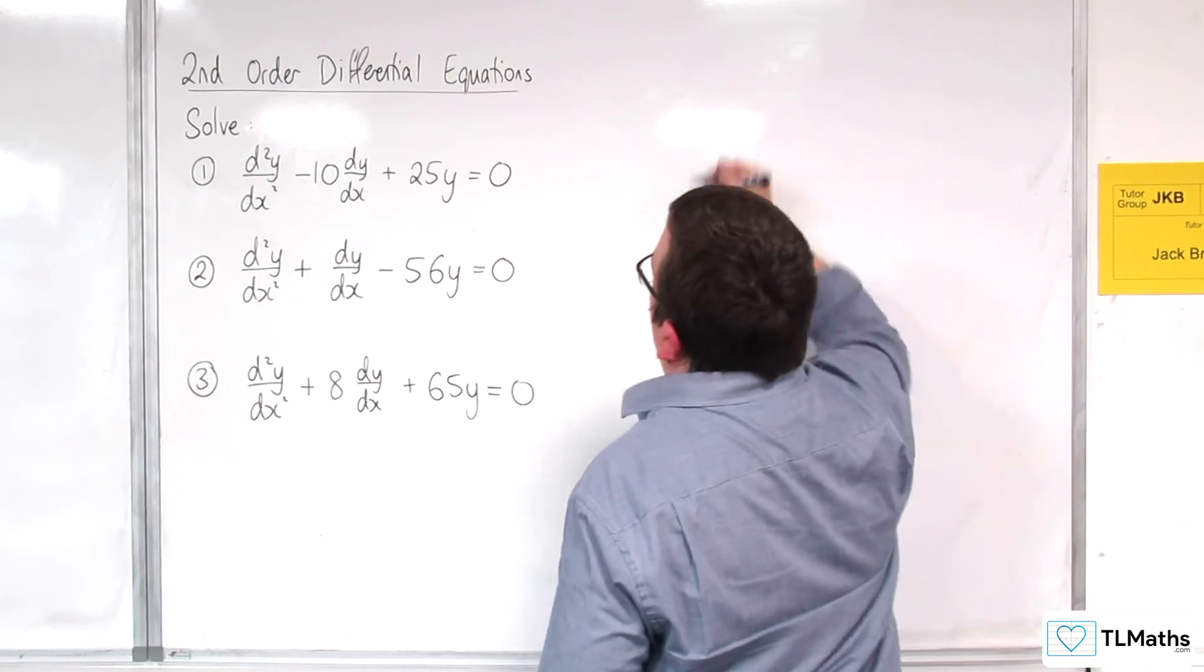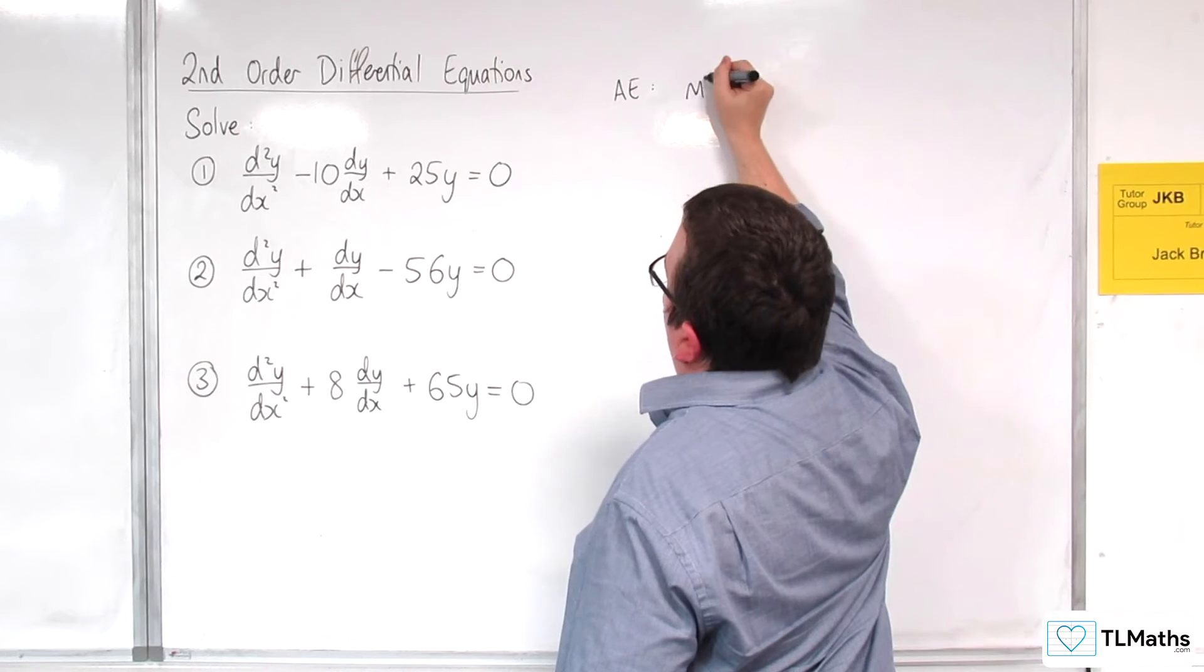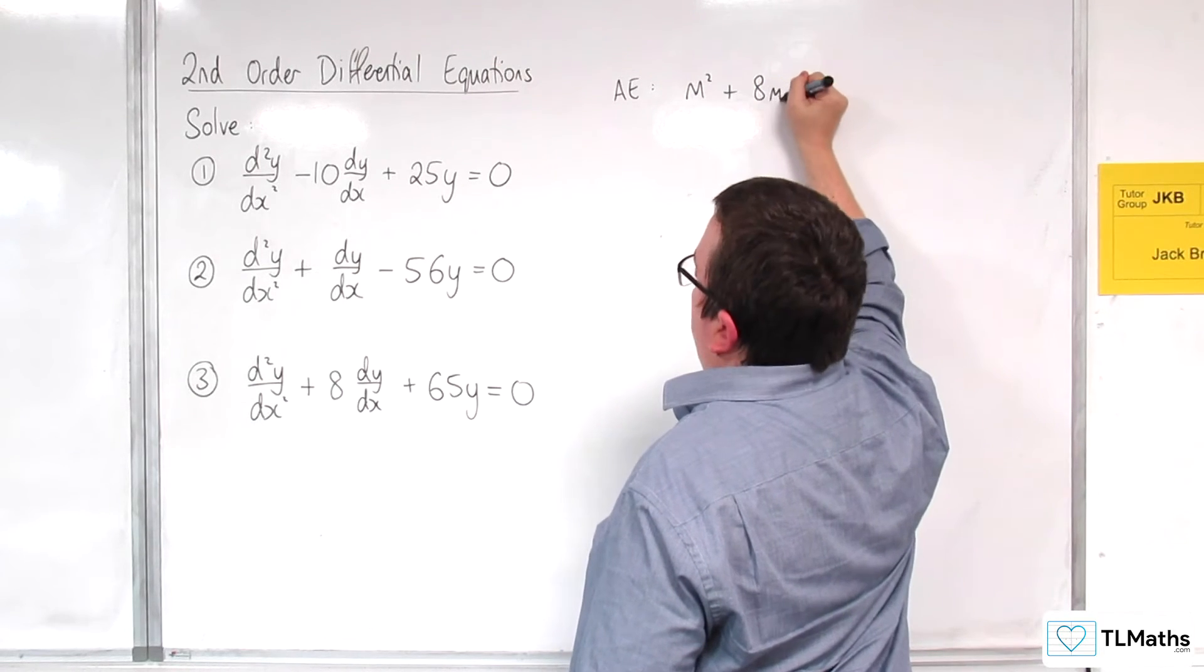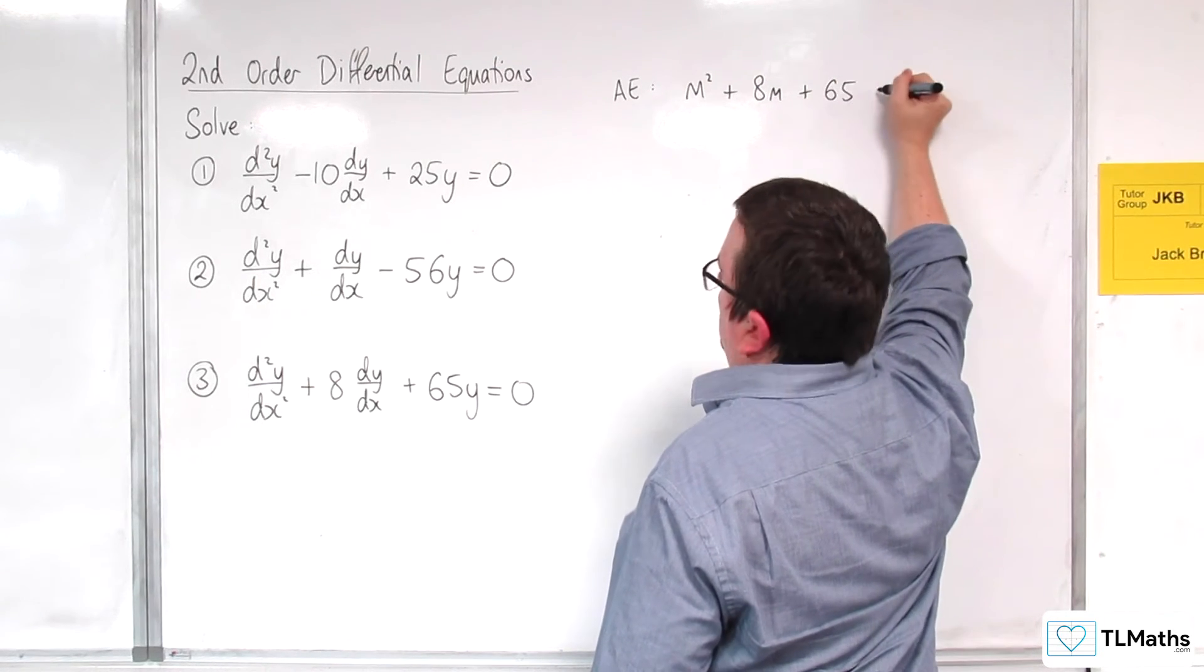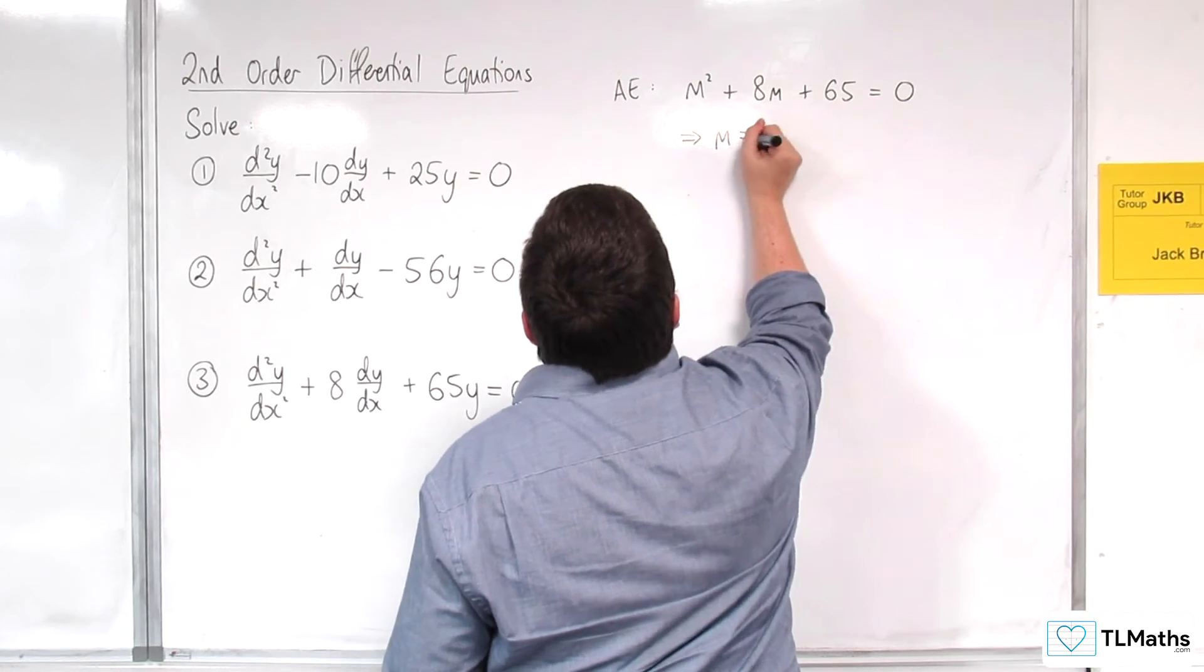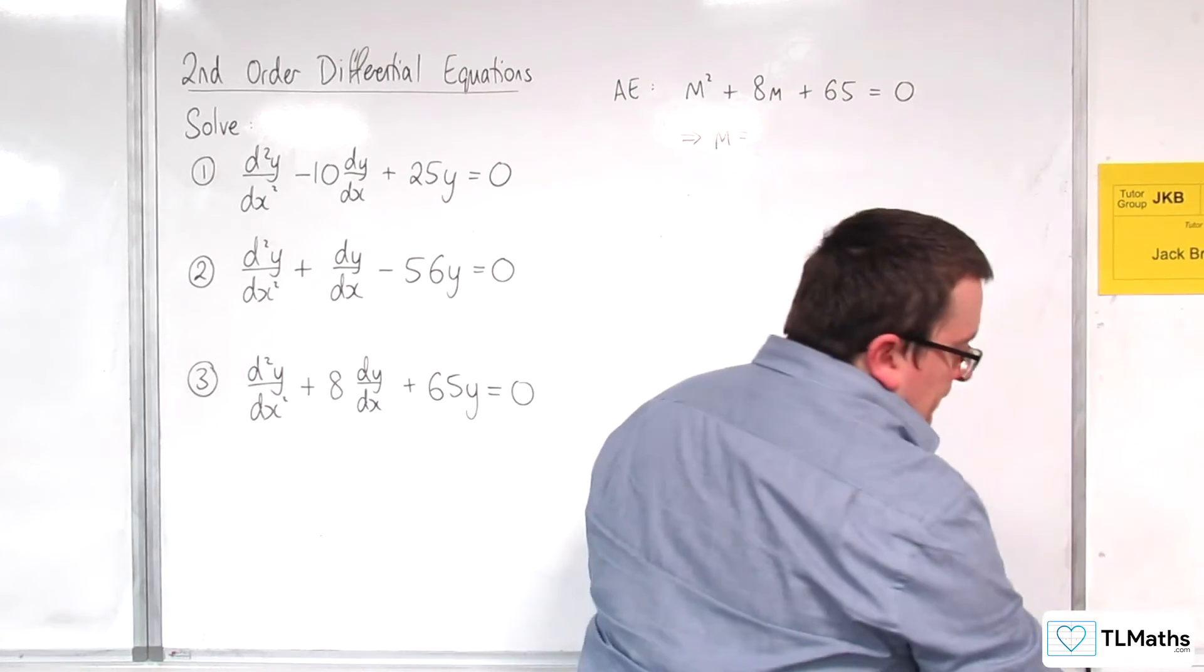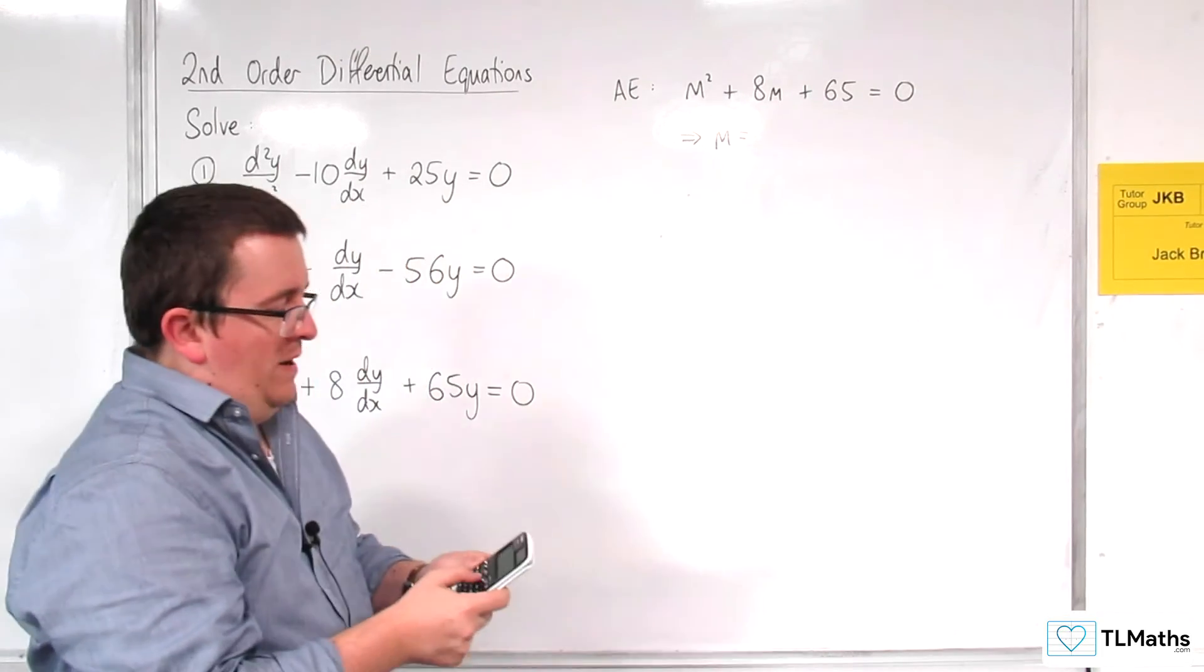So number 3. Again, straight in with the auxiliary equation. We get m² + 8m + 65 = 0. You can't immediately spot if that factorizes, so I'm going to go to my quadratic solver.